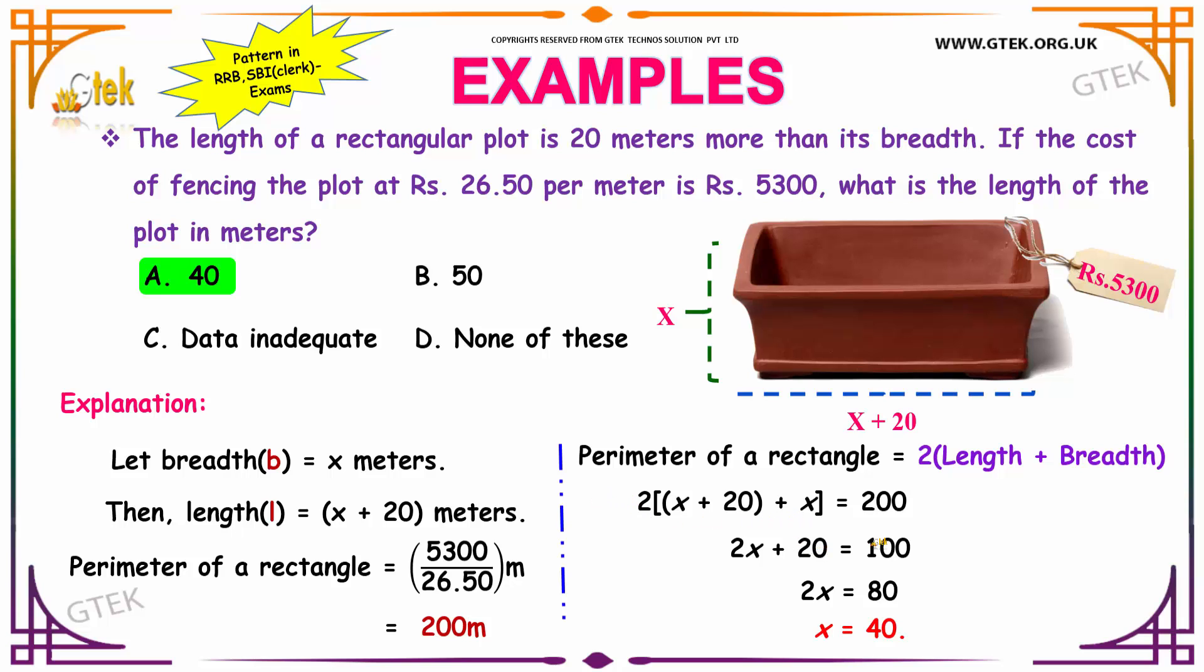Solving this, we get 2x plus 20 is equal to 100. 2x is 80, so your x value is equal to 40.